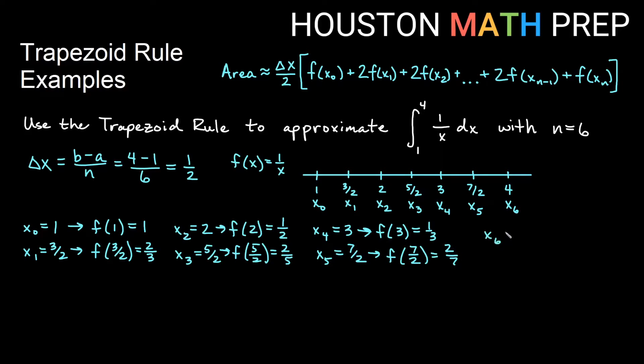And then my last x value, x₆ is 4, and if I plug in 4, I will get 1 over 4. So those are my y values now.